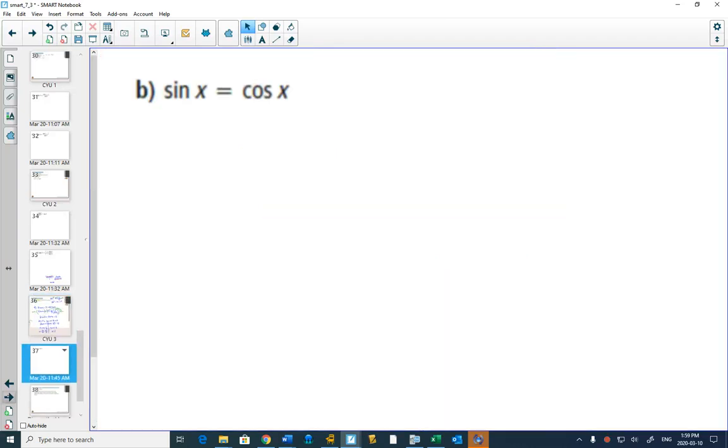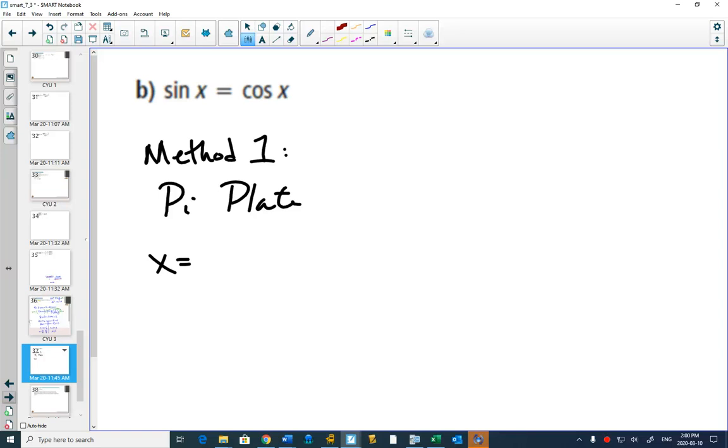Sine x is equal to cos x. Method one. When does that happen on your pi plate? When they're both root 2 over 2 and root 2 over 2. So then x is equal to? No. X is the angle. Pi over 4. Good. And then also, why 5 pi over 4? They're both negative. That's where they're both negative. So we could use just our pi plate and say, I know when they're both the same at pi over 4 and at 5 pi over 4.